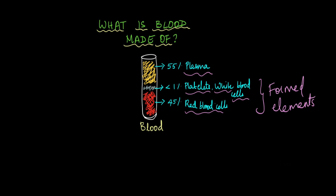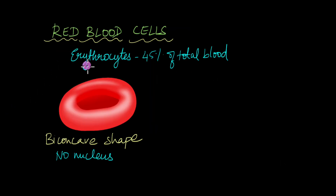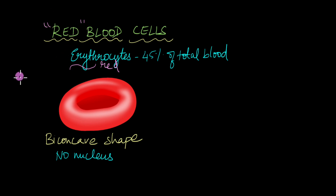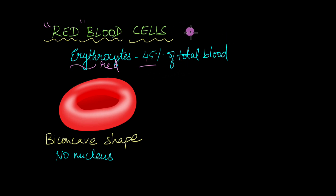First, we will start with red blood cells. Red blood cells are also known as erythrocytes. 'Erythro' here means red. They are called so because of their characteristic red color — this is what gives blood its red color as well. Erythrocytes constitute about 45% of total blood. They are the second major component of blood after plasma.